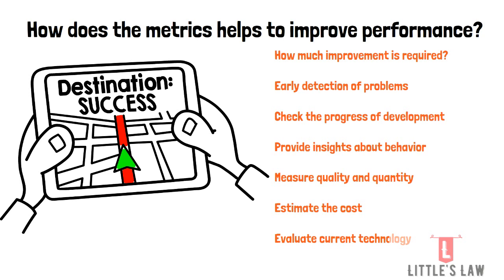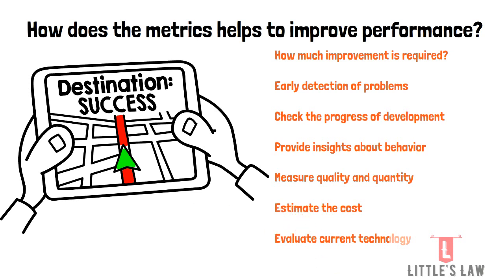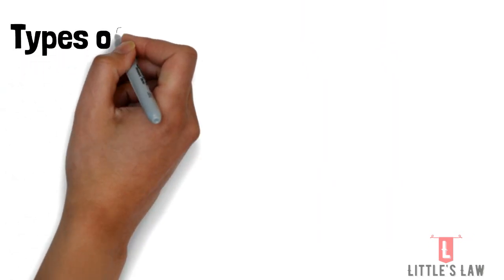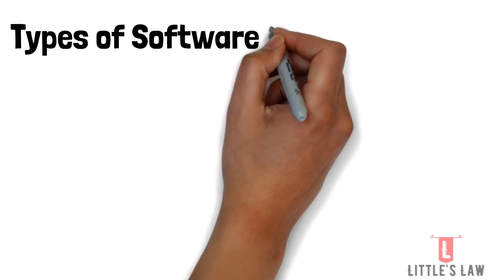These metrics also help developers make important decisions such as estimating the cost of a project and scheduling future projects. Finally, these metrics evaluate whether the current technology needs any modifications — because technology is constantly being upgraded, whether Java, .NET, or other platforms.